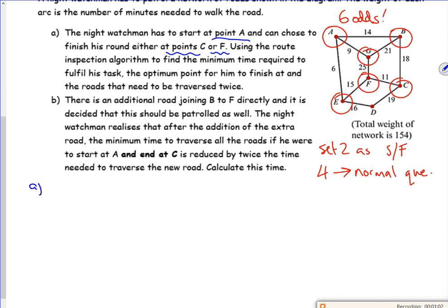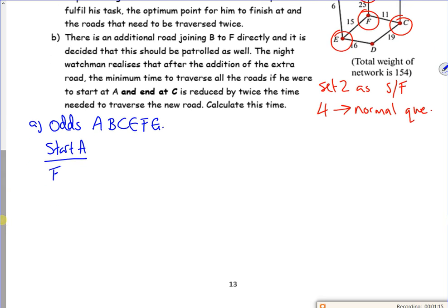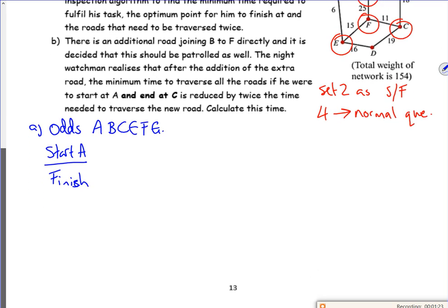So if I've got my odds which are A, B, C, E, F, G - if I start at A, I could finish at C or finish at F. So if I finish at C, my odds are B, E, F, G.